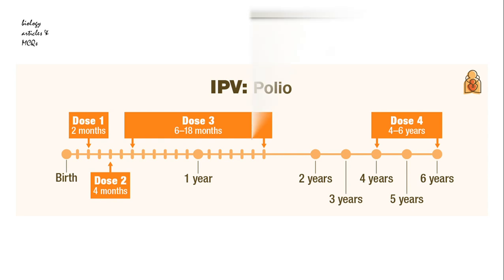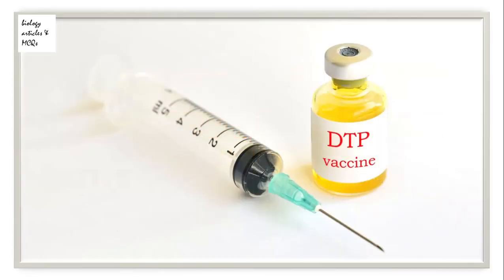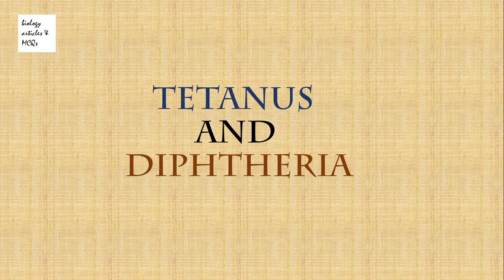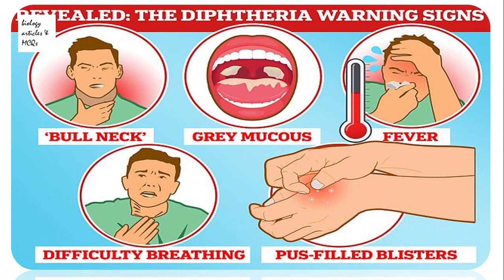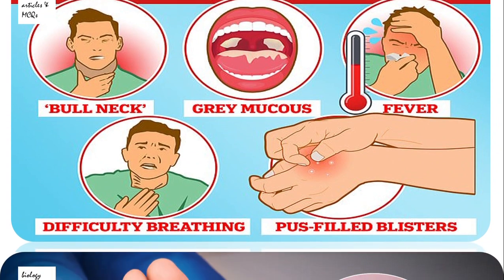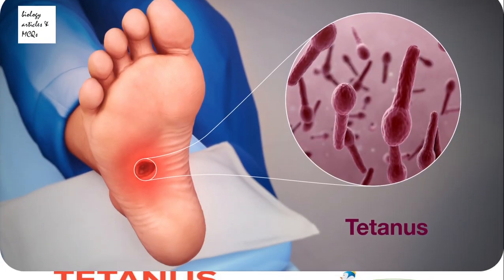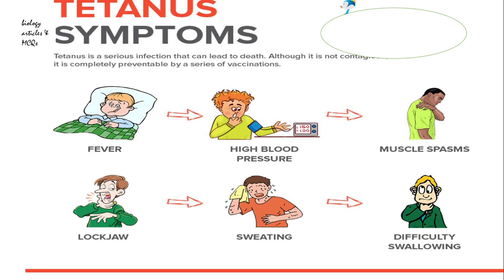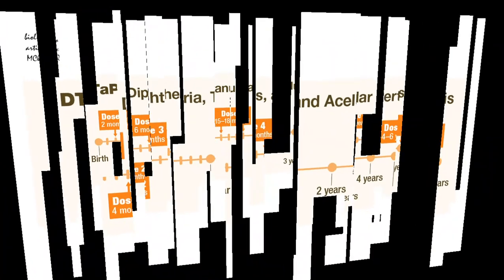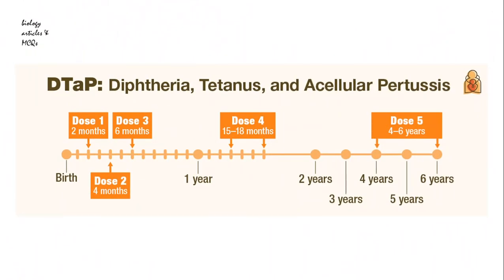The next important vaccine is DTP, used for tetanus and diphtheria. Diphtheria infects the throat and produces toxins making it hard for children to breathe and swallow. Tetanus causes painful contractions and can lock a child's neck and jaw muscles. Children should get vaccinated at two months, four months, six months, fifteen to eighteen months, and four to six years old.